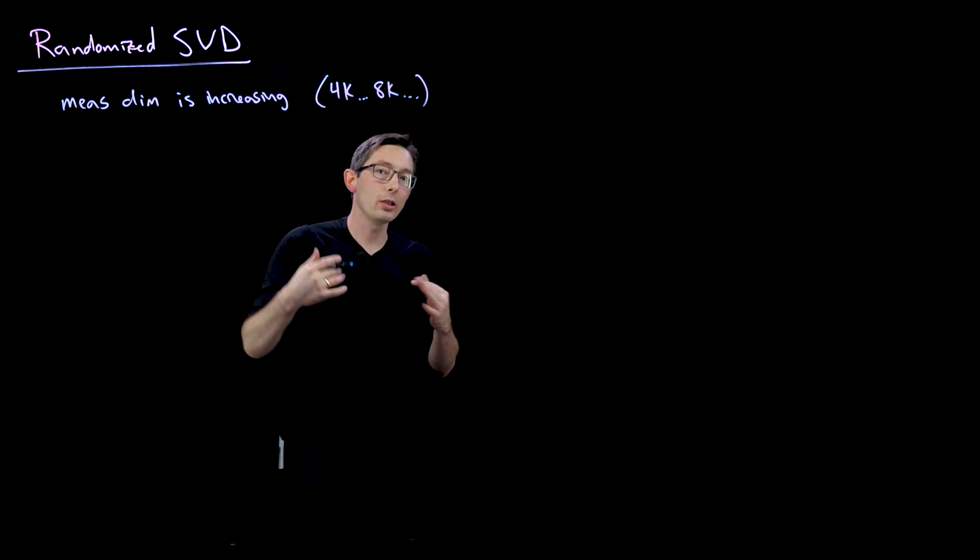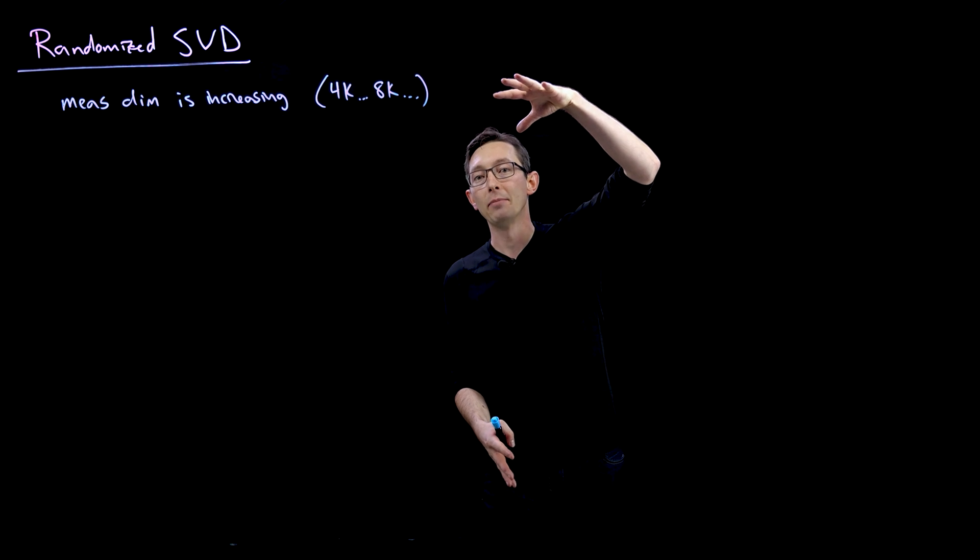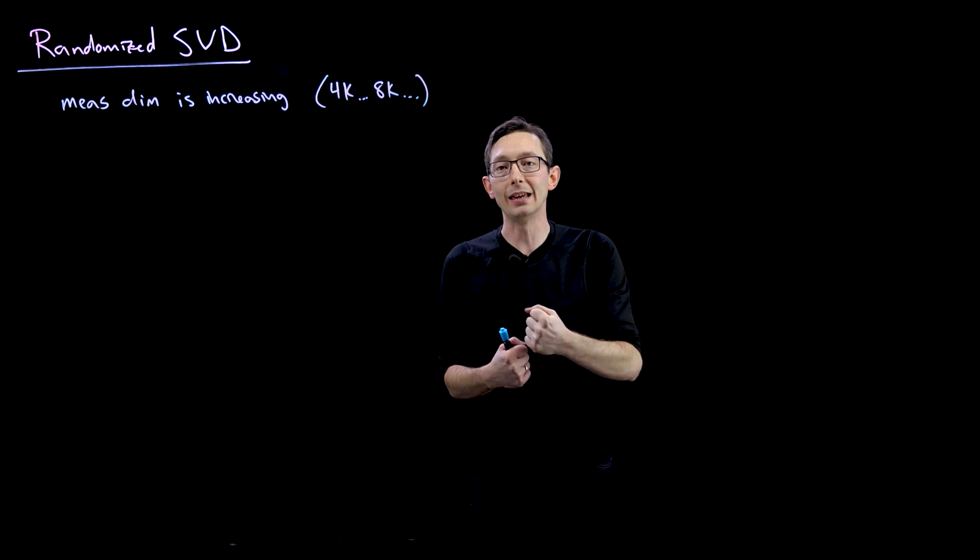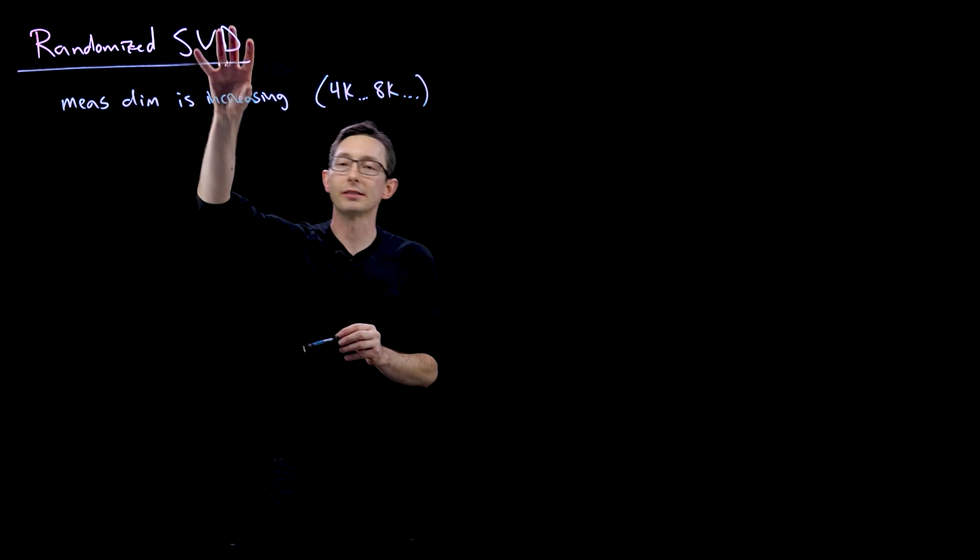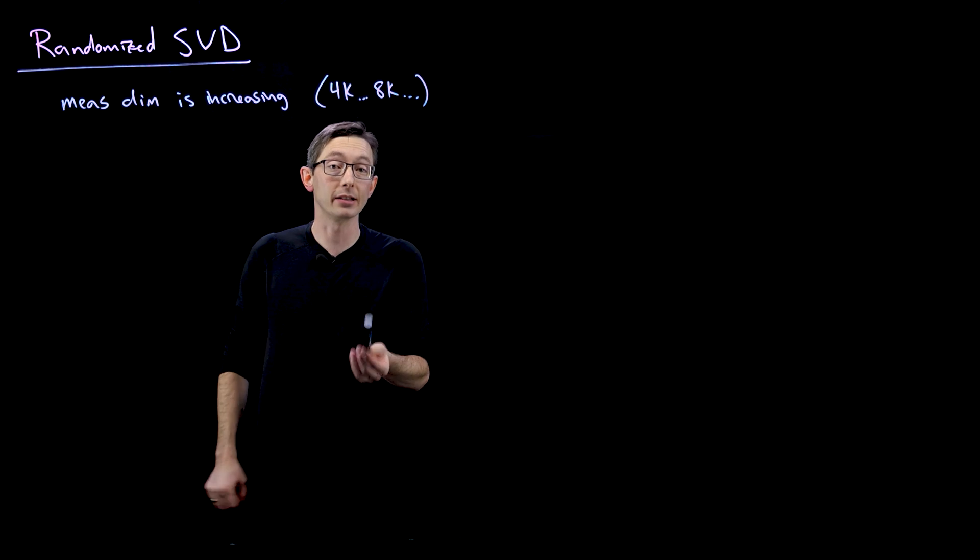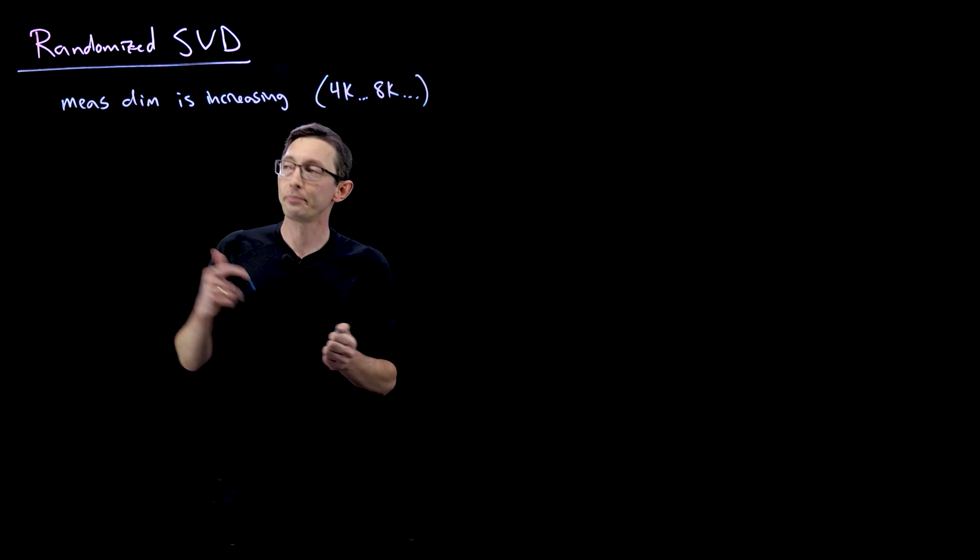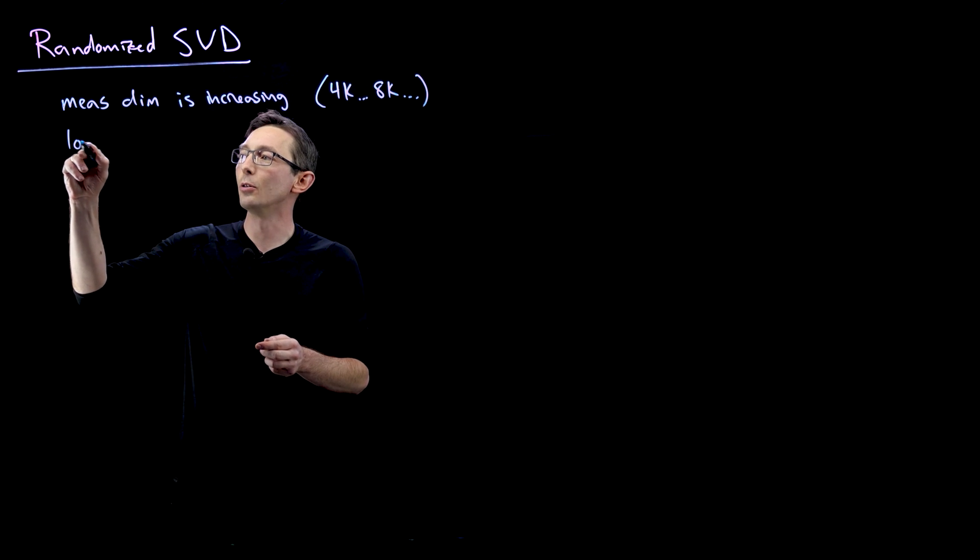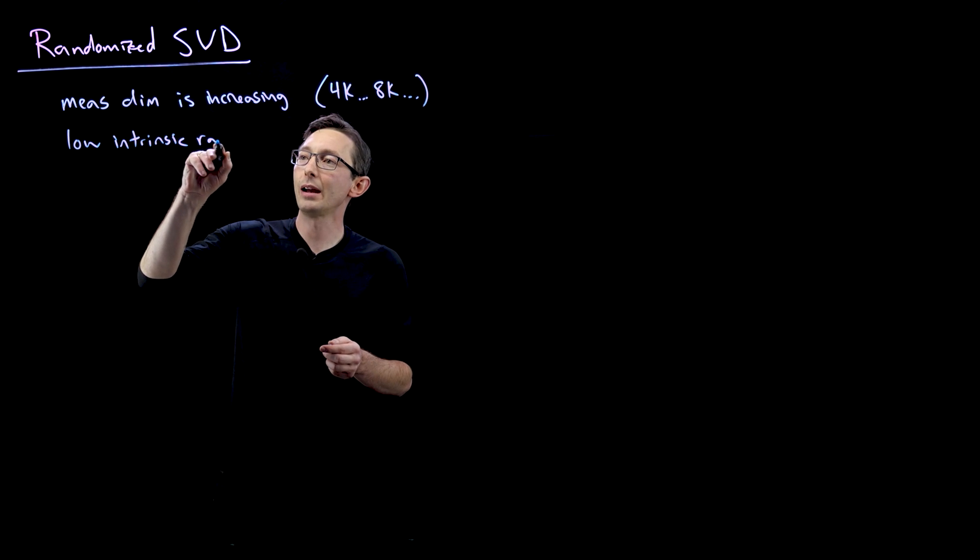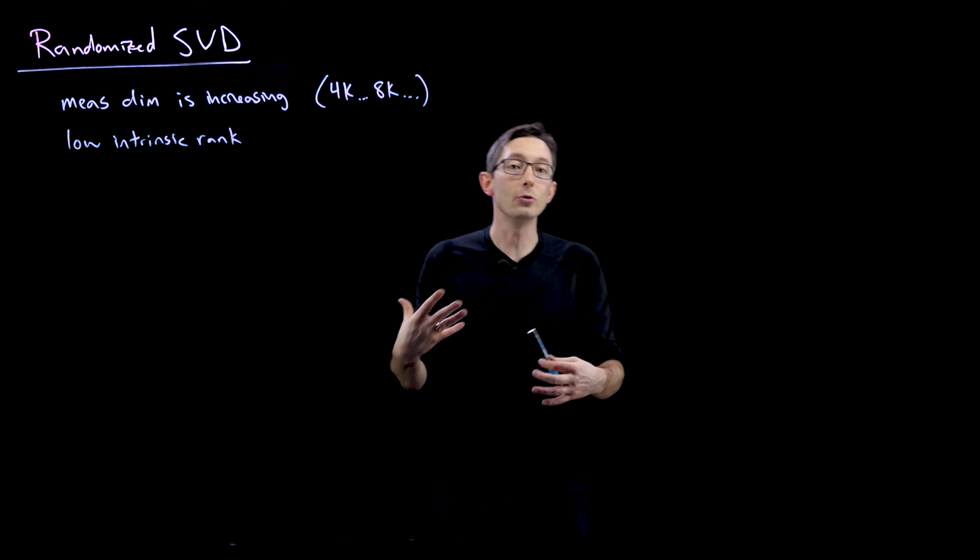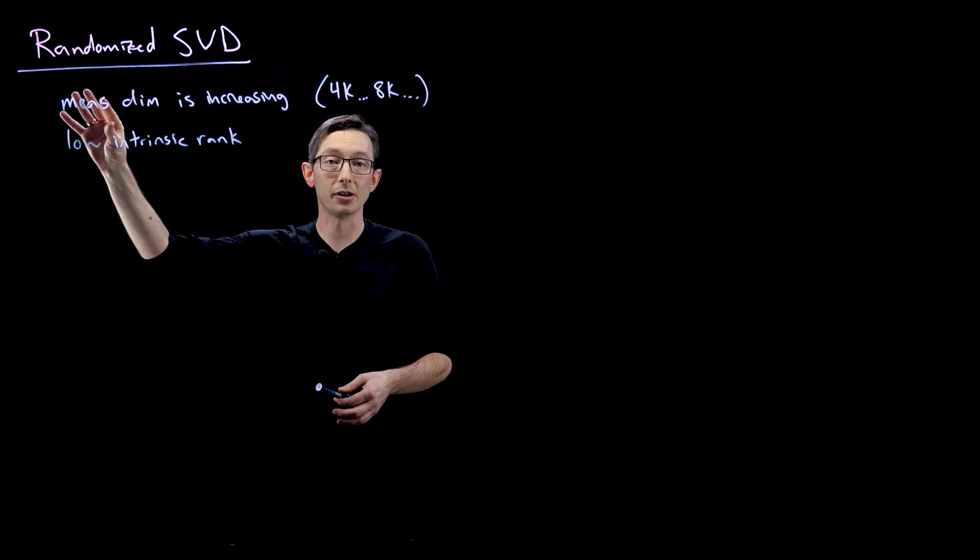But the whole idea of the SVD is that even given very, very high dimensional data, there are a few key patterns that exist in the data that you care about. Or at least that's the hope, is that there are some patterns in that data that you actually care about for building models or for understanding the data. And so there may still be a low intrinsic rank.